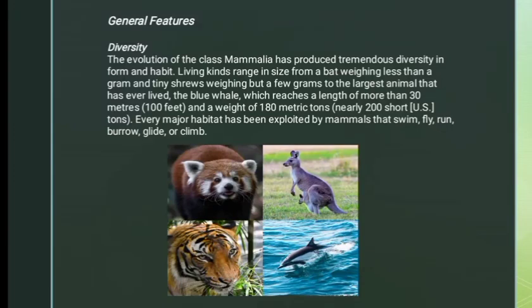General Features — Diversity: The evolution of the class Mammalia has produced tremendous diversity in form and habit. Living kinds range in size from a bat weighing less than a gram and tiny shrews weighing but a few grams, to the largest animal that has ever lived — the blue whale — which reaches a length of more than 30 meters or 100 feet, and a weight of 180 metric tons, nearly 200 short U.S. tons. Every major habitat has been exploited by mammals that swim, fly, run, burrow, glide, or climb.